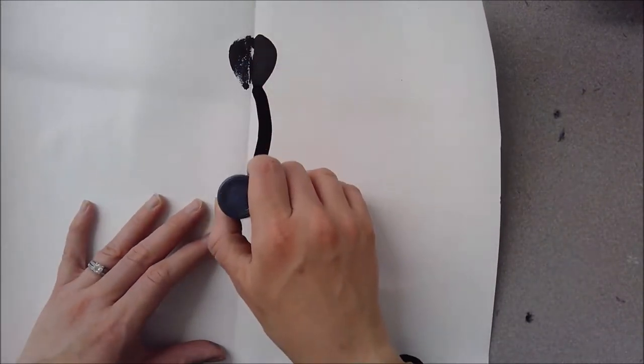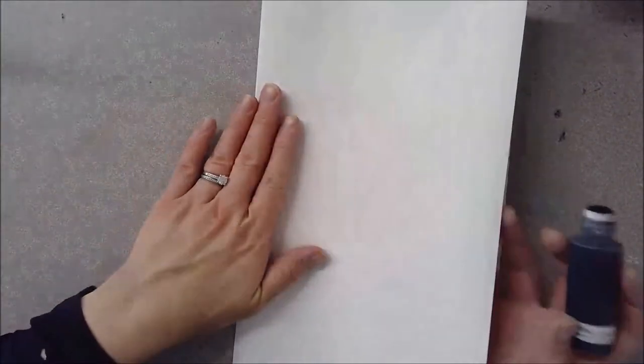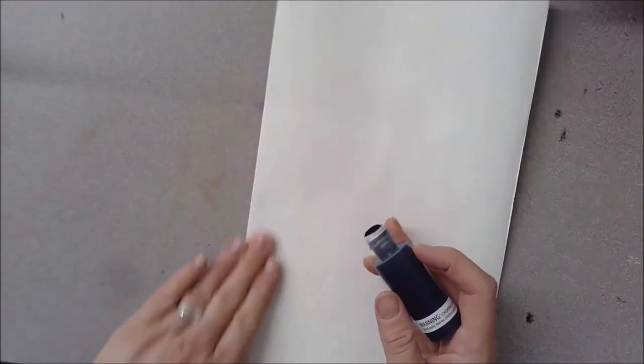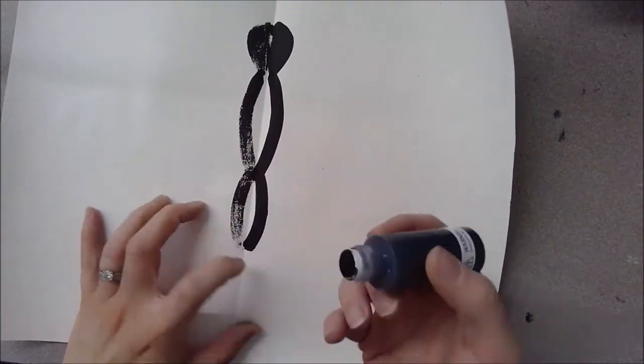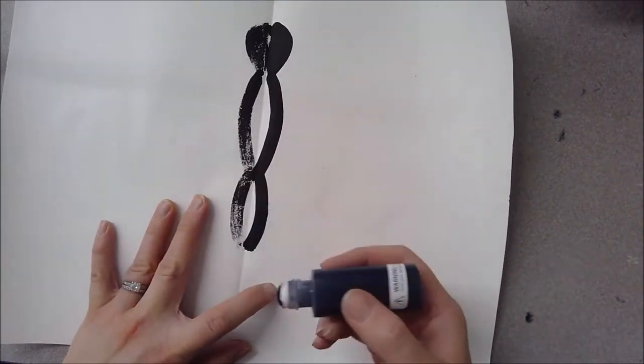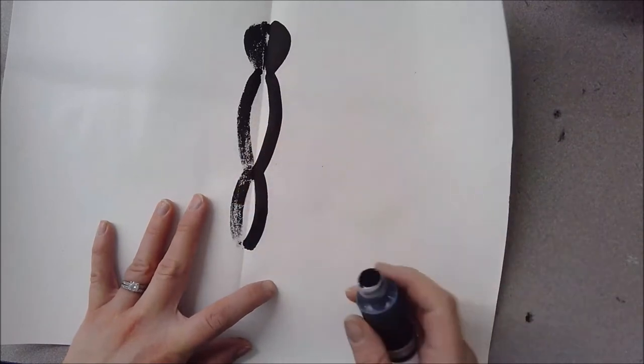Now I'm going to do the body, adding just a little curve to it. If you don't like it hollow in the middle you could color it in with your black as well.